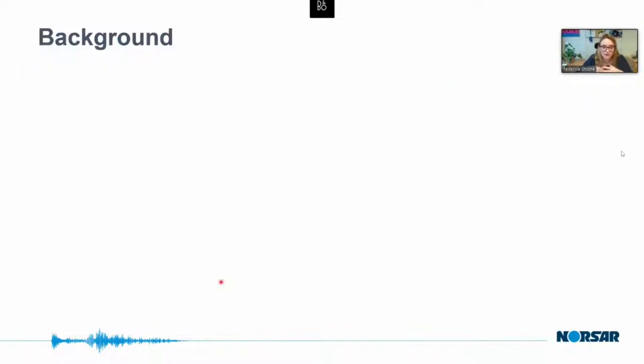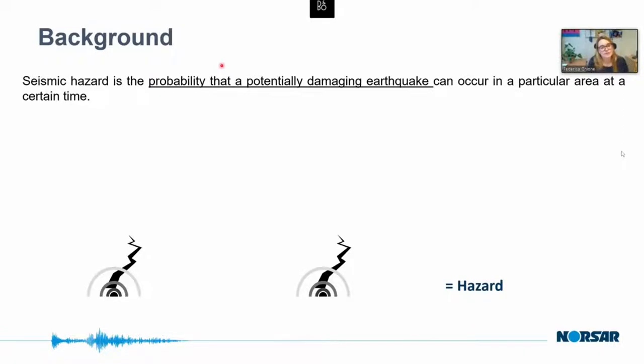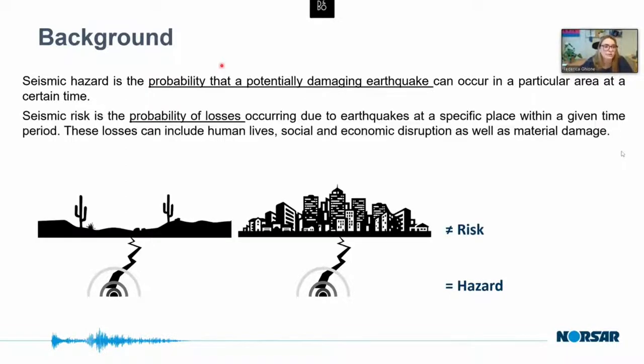I am personally involved as PhD in this project, and the title of my project is seismic risk assessment for Oslo. So just to clarify, when I talk about seismic hazard, we want to express the probability that a potentially damaging earthquake can occur in an area in a specific time period. And when we are talking about seismic risk, we are talking about the probability of losses. This is connected to losses that can be human lives, social, and economic losses.